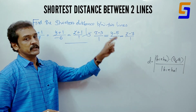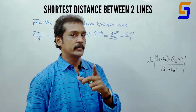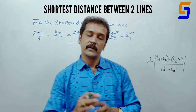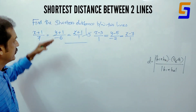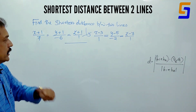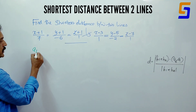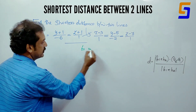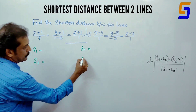Now this is the Cartesian formula. Let's identify the vectors A1, B1, A2, B2.